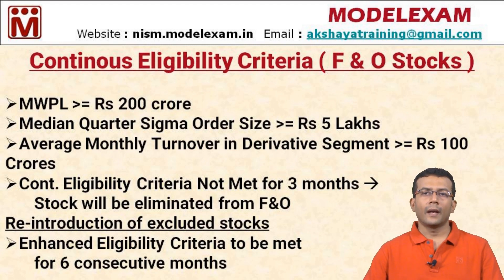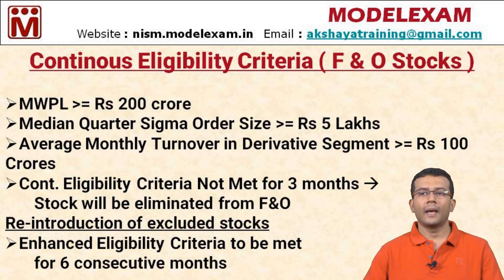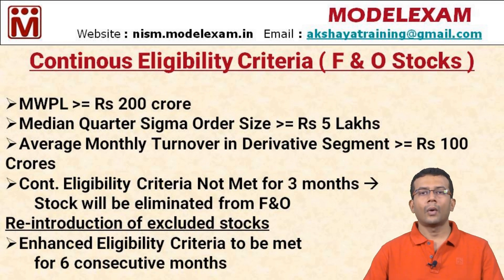If a stock has been excluded from F&O because it failed the continuous eligibility criteria for three months, it can re-enter the F&O segment only if it meets the enhanced eligibility criteria continuously for six months to be considered for inclusion again.